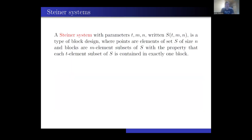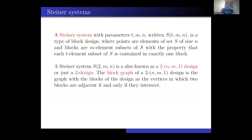A Steiner system with parameters t, m, n is a type of block design where points are elements of a set S of size n, and blocks are m-element subsets of S, with the property that each t-element subset of S is contained in exactly one block. A Steiner system with parameters t, m, n is also known as a t-(n, m, 1) design. The block graph of a 2-design is the graph with the blocks of the design as vertices, in which two blocks are adjacent if and only if they intersect.